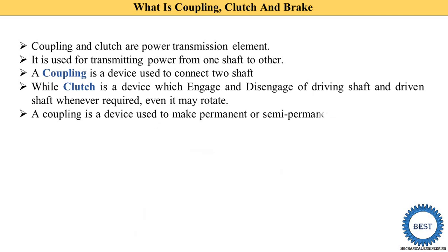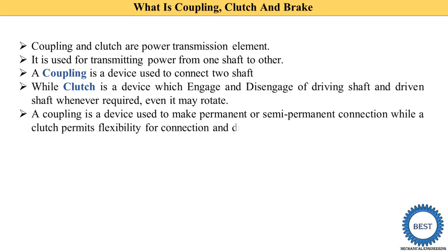Coupling is a device used to make permanent or semi-permanent connections between two shafts. While clutch permits flexibility for connection and disconnection whenever required — when we press the clutch, disconnection occurs.